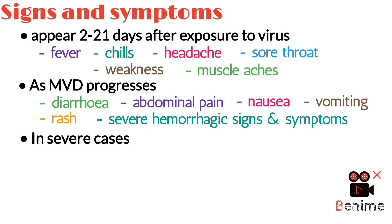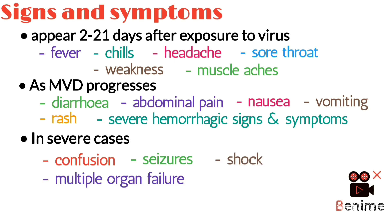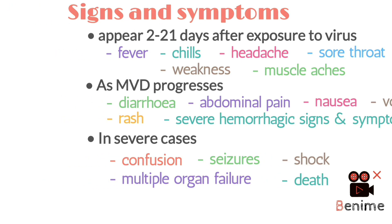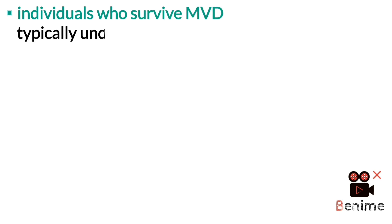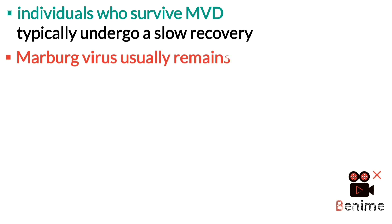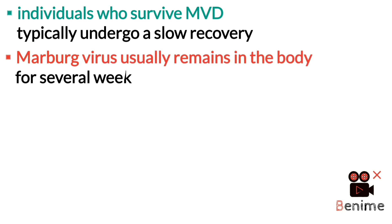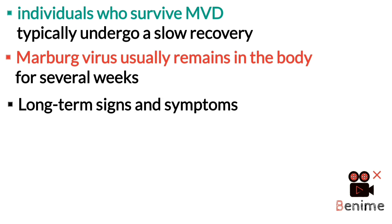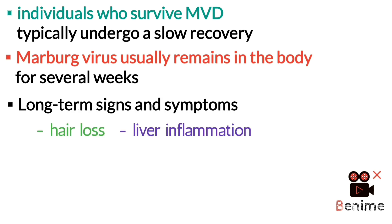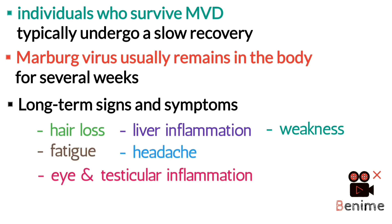In severe cases, confusion, seizures, shock, multiple organ failure, and death may follow. Individuals who survive MVD typically undergo a slow recovery as the Marburg virus usually remains in the body for several weeks. Individuals may experience long-term signs and symptoms such as hair loss, liver inflammation, weakness, fatigue, headaches, and eye and testicular inflammation.